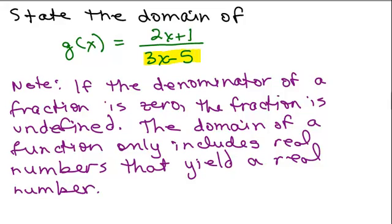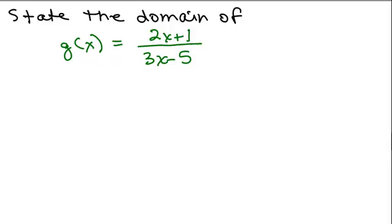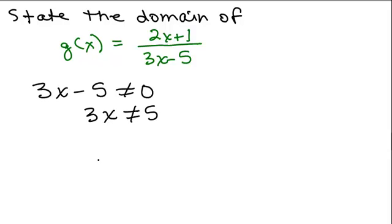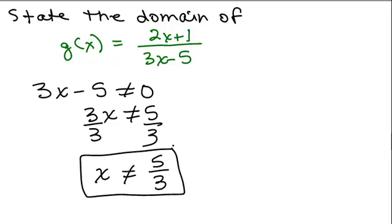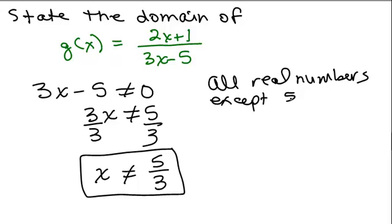So the denominator is 3x minus 5. So 3x minus 5 cannot be zero. So since 3x minus 5 can't be zero, that's what we write. 3x minus 5 cannot be zero. So let's solve this to see what x can't be. So if we add 5 to both sides, it's not equal. 3x is not equal to 5 and we divide by 3. This gives us the answer. x cannot be 5 thirds. So now, this assumes that it's all real numbers except 5 thirds. So sometimes people write that in words all real numbers except 5 thirds or except x equals 5 thirds, different ways of writing it.